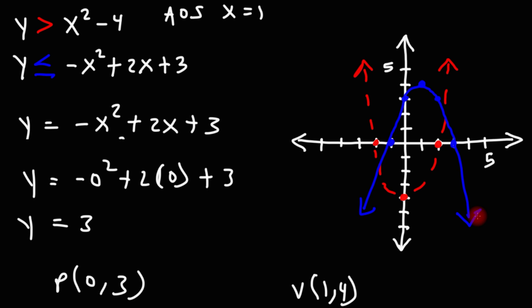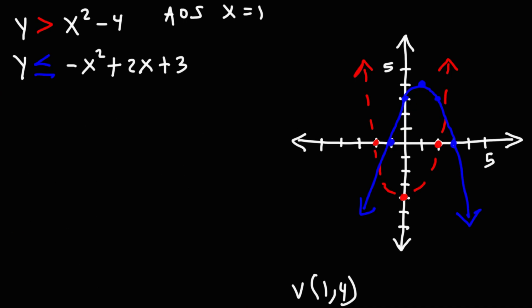So notice that we have y is greater than x squared minus 4. So we're going to shade above that graph.